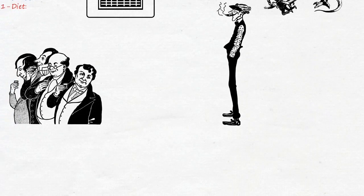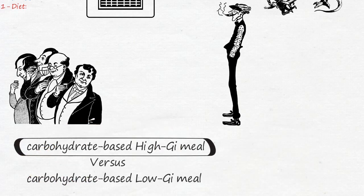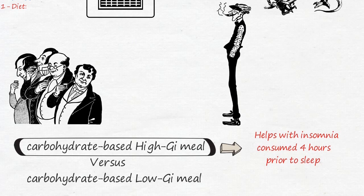In addition you may want to choose your dinner very carefully. Chin Moi Cho had shown in his research how a carbohydrate based high glycemic index meal can result in a shortening of sleep onset compared to a carbohydrate based low glycemic index meal, provided it's consumed around four hours before bedtime.